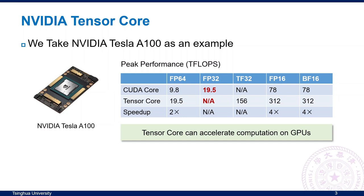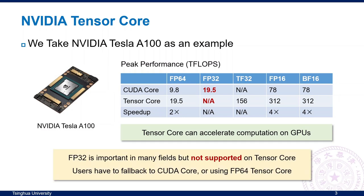For example, FP32 is a widely used floating-point type used in scientific computing, machine learning, and other fields. This data type lacks support from Tensor Core. Therefore, when users want to use FP32, they must use CUDA Core, or use FP64 on Tensor Core instead. Other types on other hardware have similar problems.